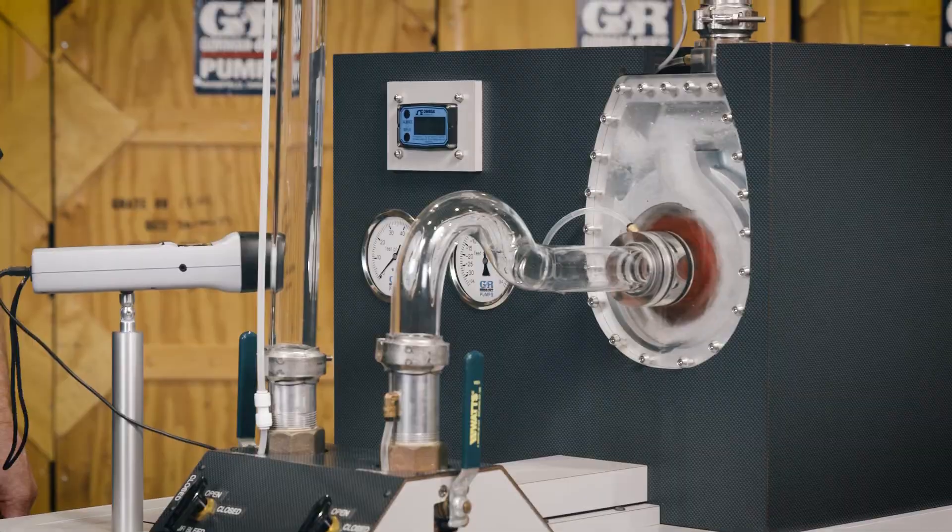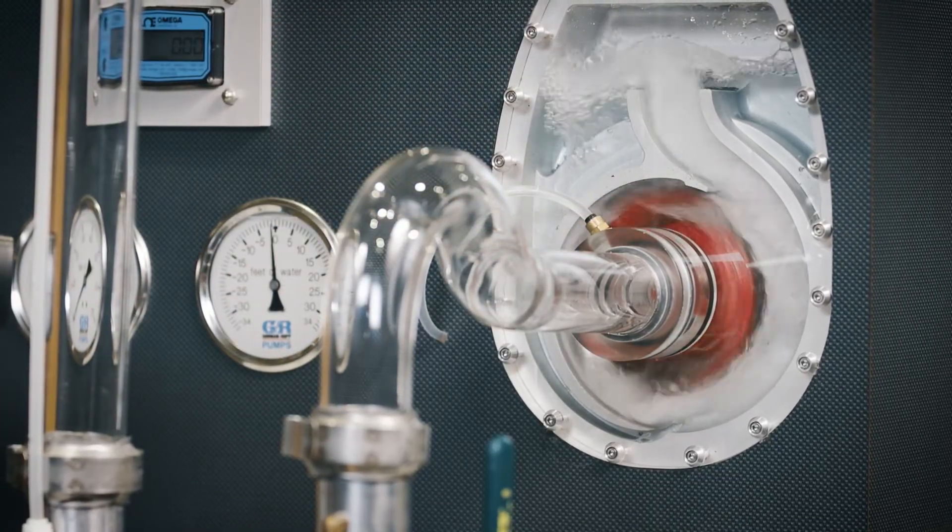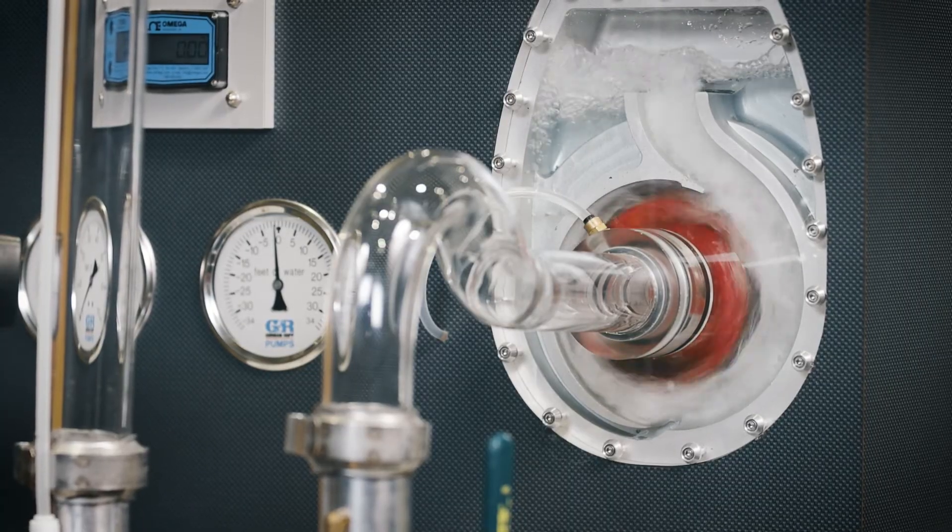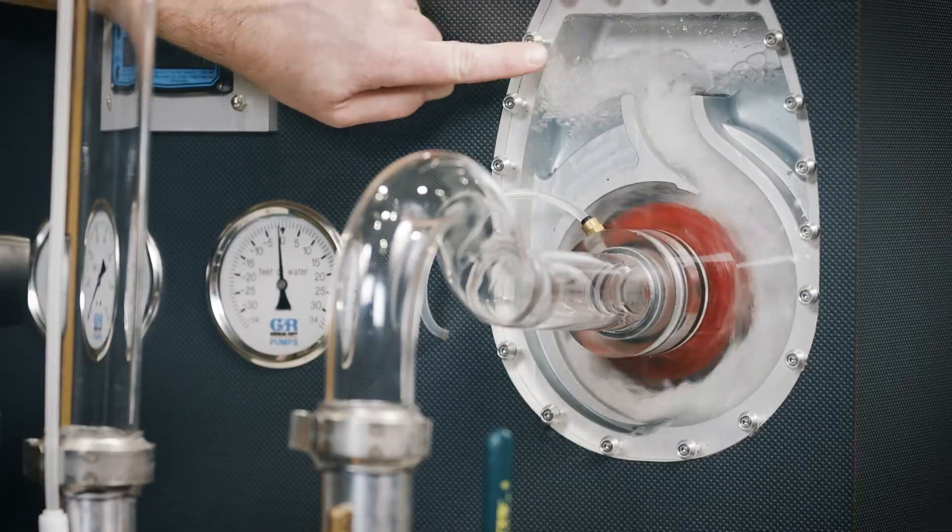As the air and water mixture enters the center or eye of the spinning impeller, centrifugal force throws the mixture to the outer diameter of the impeller, where it enters the water channel and is then expelled into the discharge chamber.